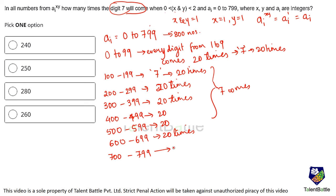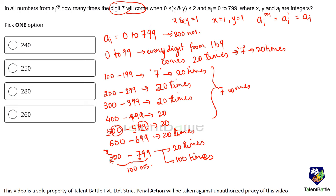For the range 700 to 799: normally 7 appears 20 times in the tens and units places. But additionally, every number from 700 to 799 has a 7 in the hundreds place — that's 100 extra occurrences. So 7 appears 20 plus 100 equals 120 times in this range. Total: 140 plus 120 equals 260 times. The answer is option D, which is 260.